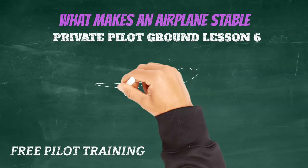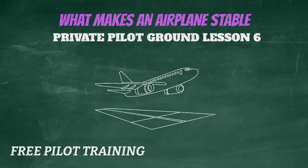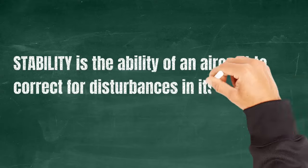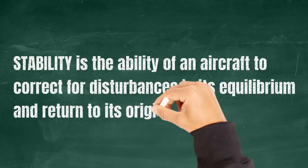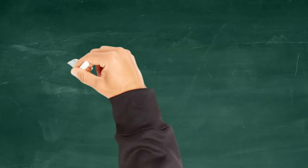Thanks for joining me on the free pilot training channel. Today we're going to be talking about stability and what makes an airplane stable. Stability is the ability of an aircraft to correct for disturbances in its equilibrium and to return to its original flight path.